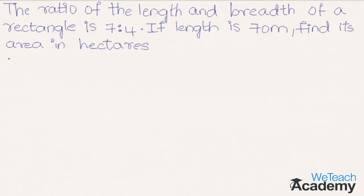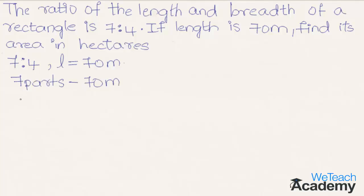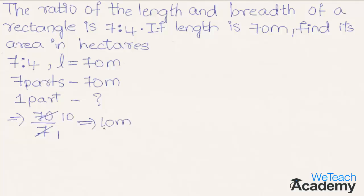The given ratio of length and breadth is 7 is to 4, and the length is 70 meters. We can write this as L = 70 meters. Since length represents 7 parts, we write 7 parts = 70 meters. Dividing 70 by 7, the value of one part is equal to 10 meters.